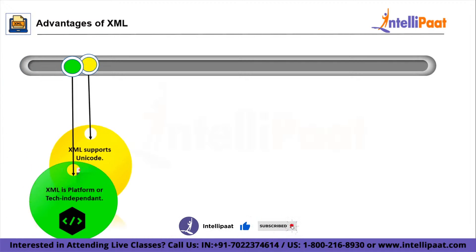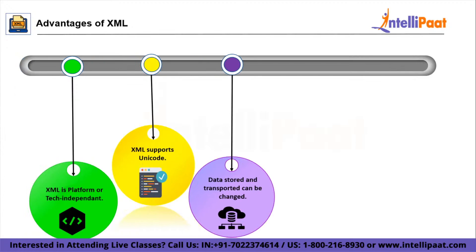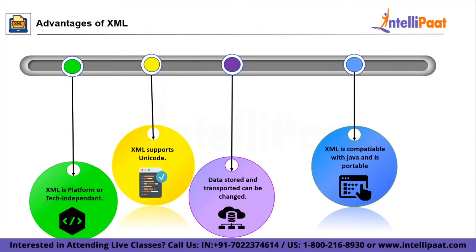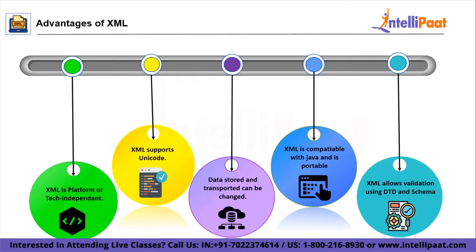XML supports Unicode, which is a numeric representation standard for each character included in a storage file — this adds extra agility to XML. Third, data stored and transported using XML can be changed at any point in time, so if you have transported some false data, XML allows you to update it. XML is also completely compatible with Java and 100% portable — in fact, it is compatible with languages such as PHP and .NET. XML simplifies data sharing between various systems. Finally, XML allows validation using DTD and schema. DTD, or Document Type Definition, is the older version of XML where the definition of the schema is achieved.